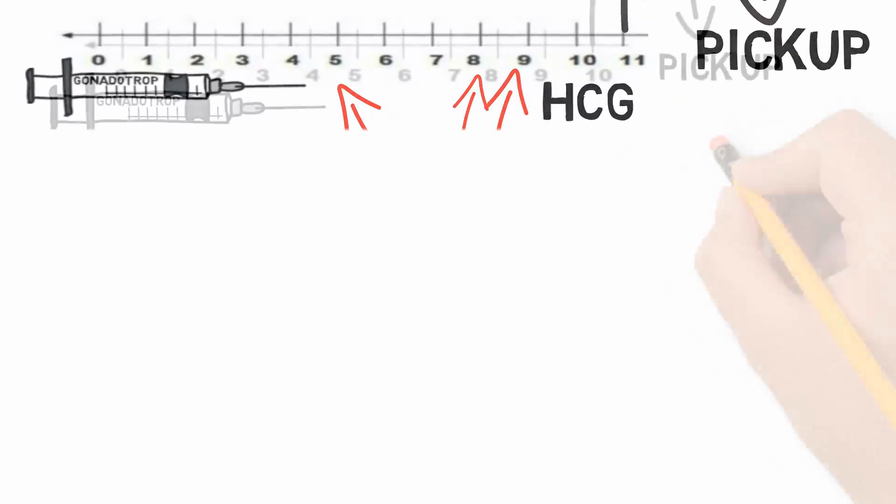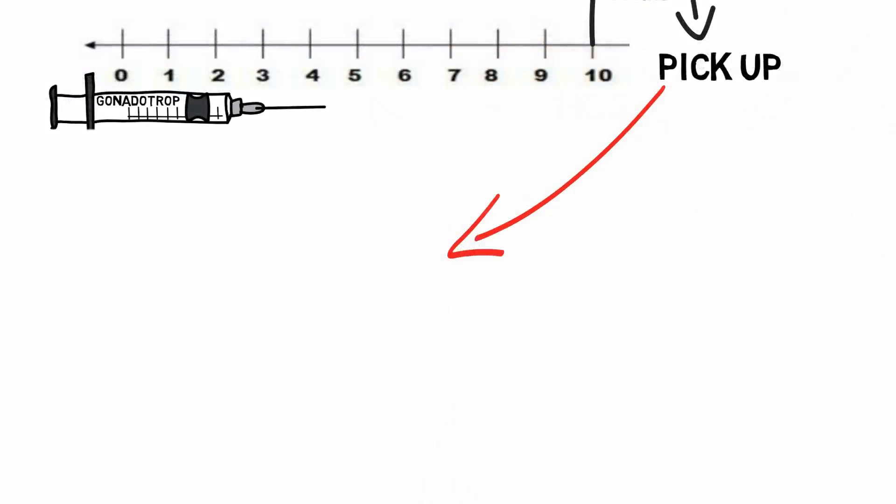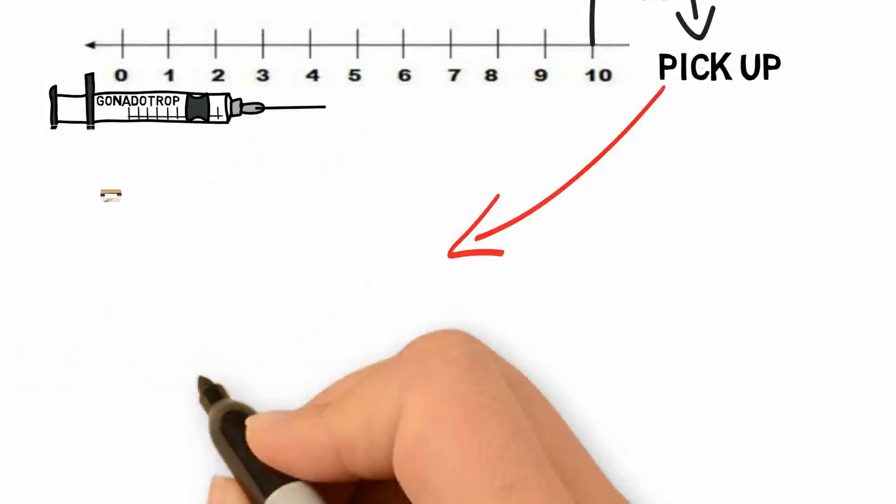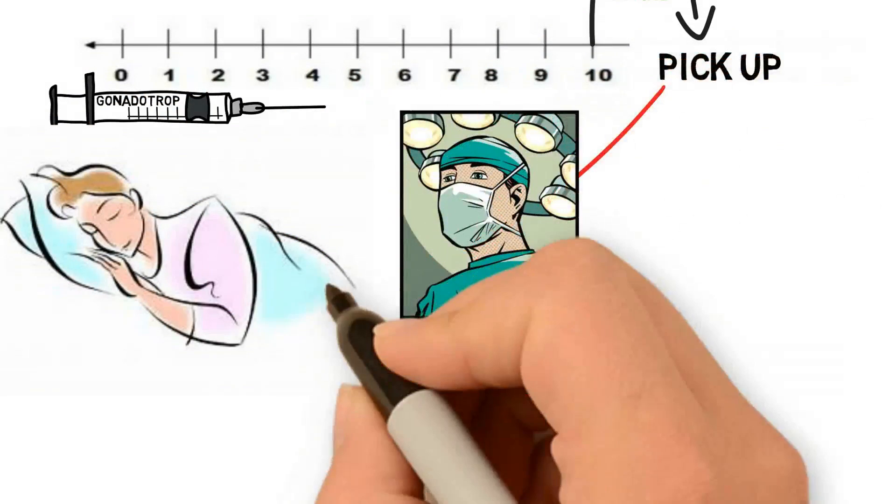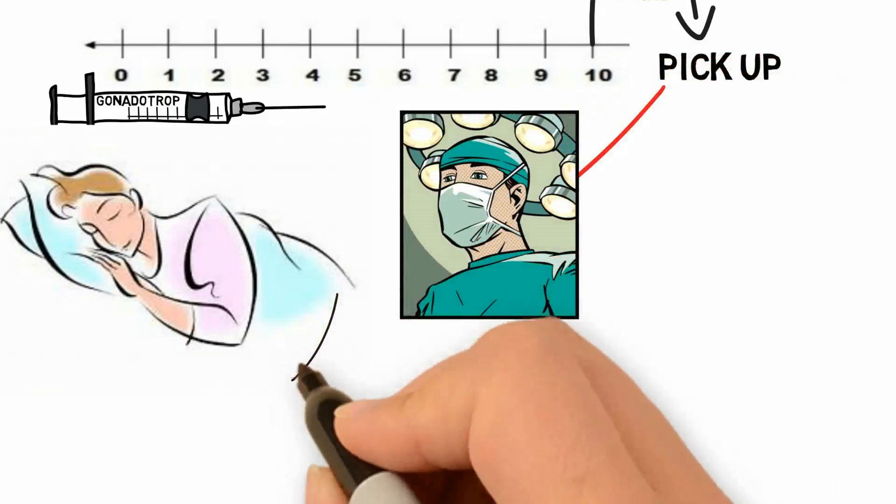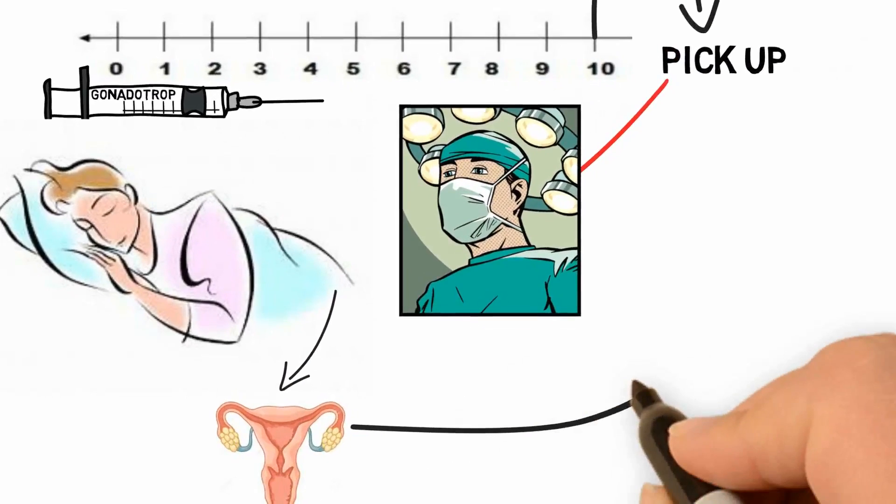The eggs are collected in about 10 minutes on an outpatient basis. The procedure is completed under light sedation with the help of vaginal ultrasound and with minimum discomfort and risk to the patient. The gynecologist extracts the follicular fluid, which is then immediately studied by the biologist, who prepares retrieved eggs for fertilization.